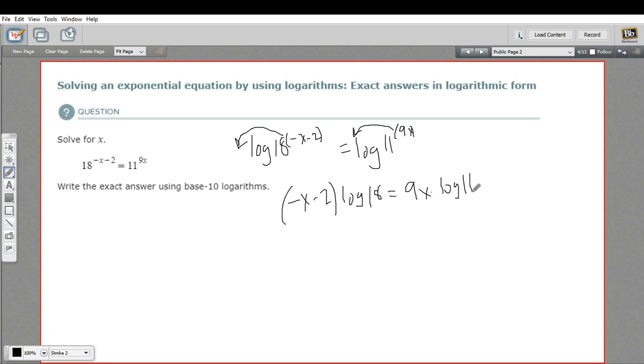The next step here is to try to get our x's on one side of the equation. And this x is stuck inside a parenthesis. So we're going to have to distribute here. So the log of 18 gets multiplied by both these pieces. So this becomes negative x times the log of 18 minus 2 times the log of 18. And then over here, we still have 9x times the log of 11.